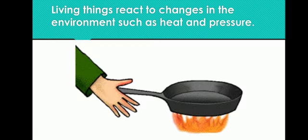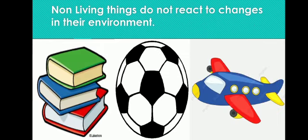The next difference is that living things react to changes in the environment, such as heat and pressure. When we touch a hot pan, we immediately remove our hand. We feel hot in summer, a pin prick hurts us, and some flowers bloom with the warmth of the sun. Non-living things do not react to changes in their environment.